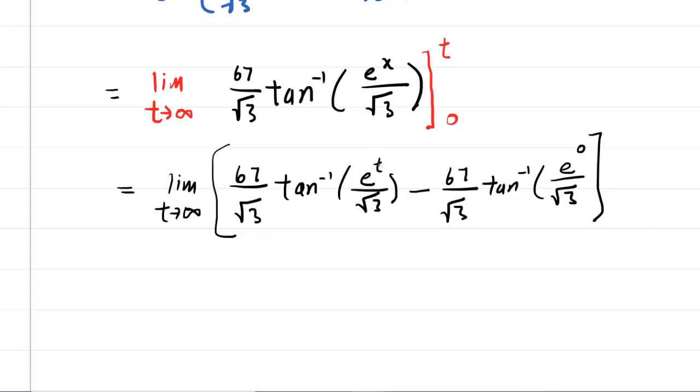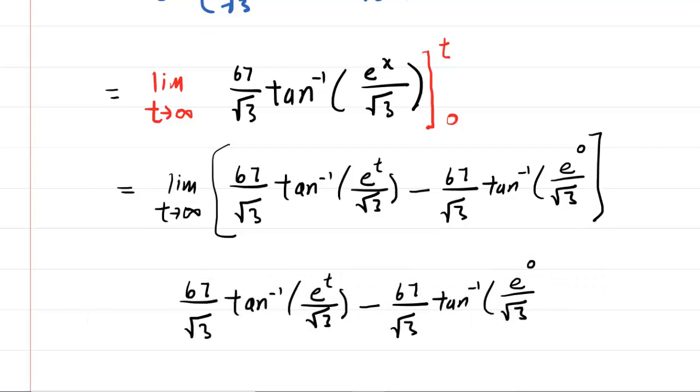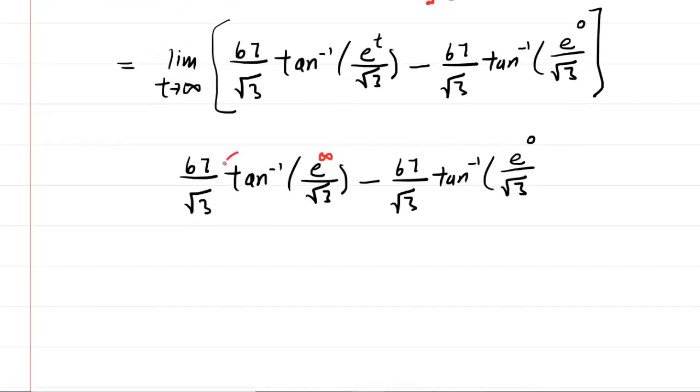Now we can go ahead and let t approach infinity. Basically, you're going to be plugging infinity in for the t. We'll change the t now to infinity. Hopefully we realize that e to the infinity is infinity because you're just multiplying the number e an infinite number of times. So you get infinity, then you divide that by radical 3, which is still infinity. So we actually have the inverse tangent of infinity, essentially.